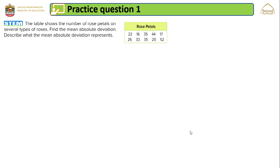The table shows the number of rose petals on several types of roses. Find the mean absolute deviation and describe what the mean absolute deviation represents. The table contains 10 values: 22, 16, 35, 45, 17, 26, 33, 35, 20, and 52.